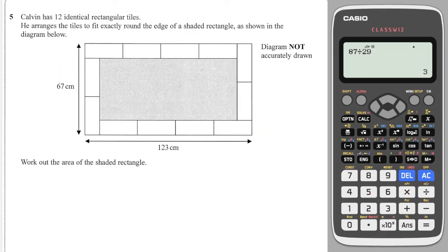And here is the final question, and it's a tricky one. It says that Calvin has 12 identical rectangular tiles. He arranges the tiles to fit exactly around the edge of the shaded rectangle. Work out the area of the shaded rectangle. Okay, so give this question a try. And here is the solution.